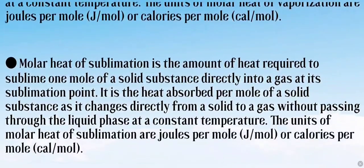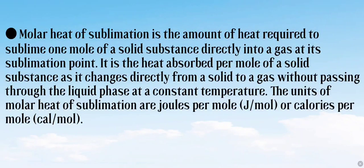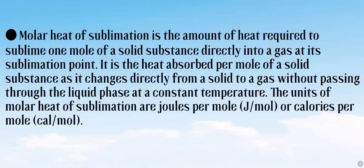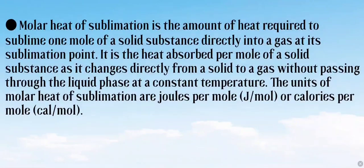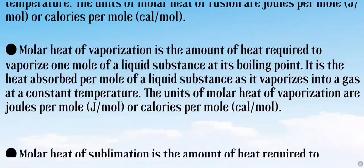Molar heat of sublimation is the amount of heat required to sublimate one mole of a solid substance directly into gas at its sublimation point. It is the heat absorbed per mole of a solid substance as it changes directly from solid to gas without passing through the liquid phase at a constant temperature. The units of molar heat of sublimation are joules per mole or calories per mole. That was the answer to question number three, which covered three definitions.